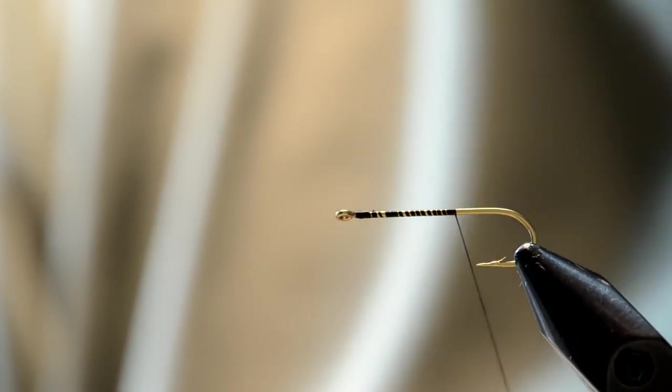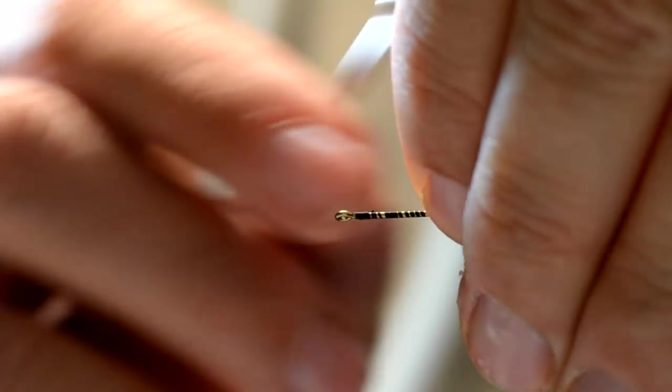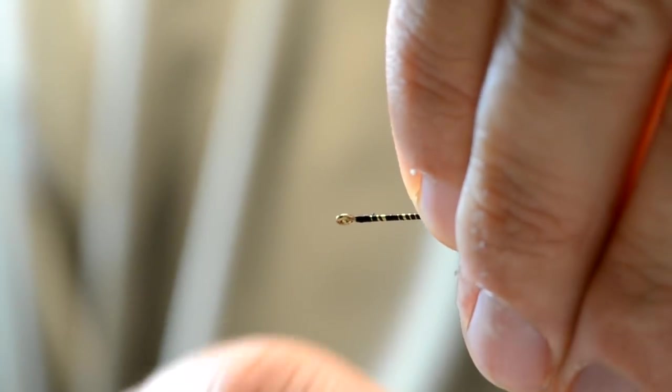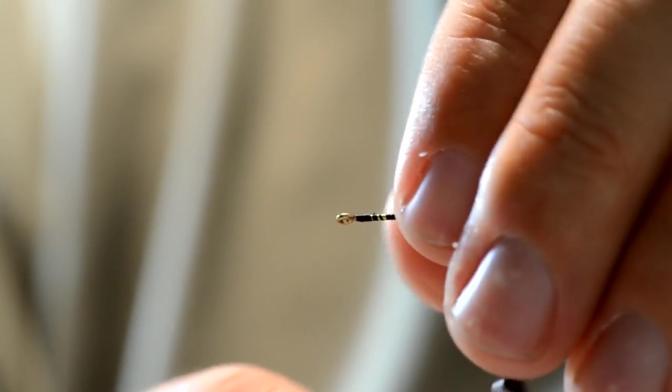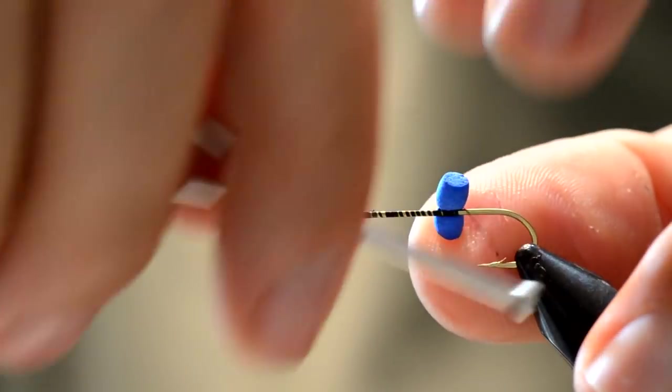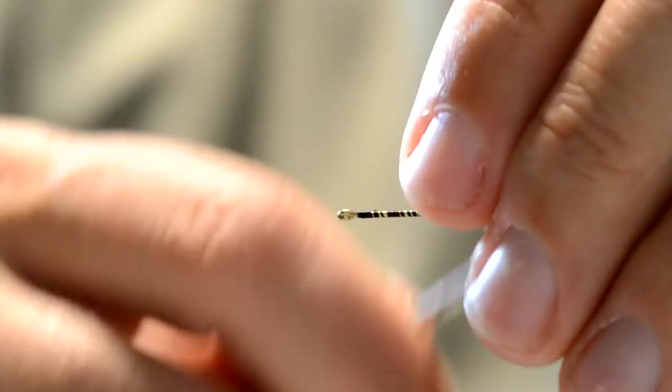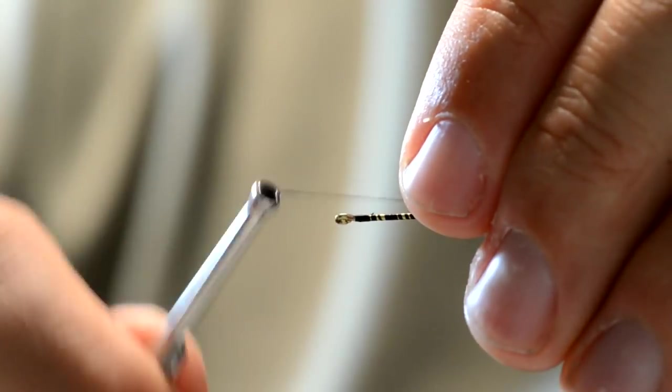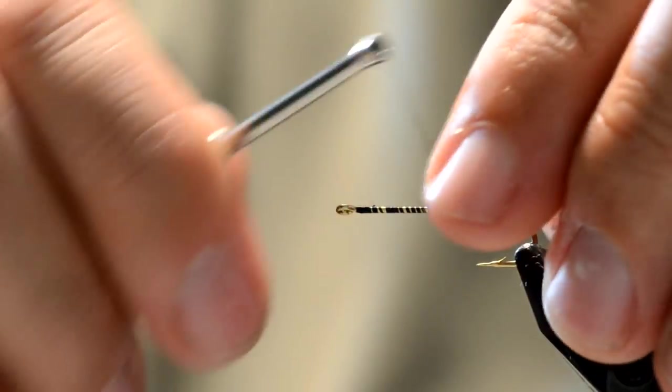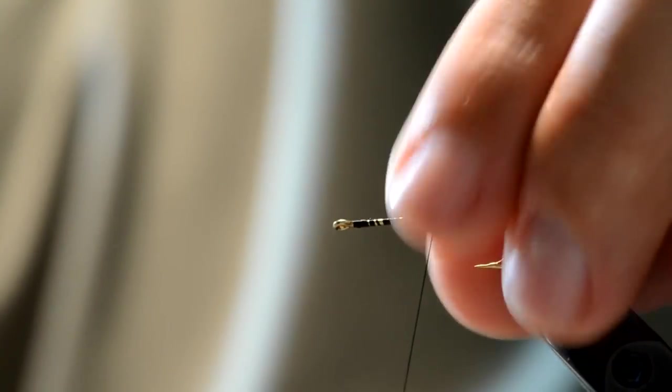Then I'm going to just figure-eight this right on top of the hook shank, splitting the difference so that they're equal. Now these eyes are going to be a little bit oversized because they aid in the flotation.